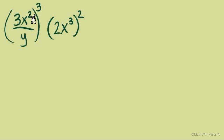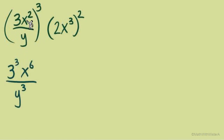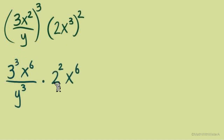Here's what I would do with this problem. I see sets of parentheses with exponents outside. First, I take the exponent and work it into every base in the parentheses. That gives me 3 to the third and x to the sixth in the numerator of the fraction, and y to the third in the denominator. For the second set of parentheses, an exponent of 2 is worked in, giving us 2 to the power of 2 and x to the power of 6. Remember: working exponents outside parentheses means multiply; when we combine same bases, that's when we add.